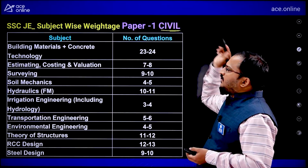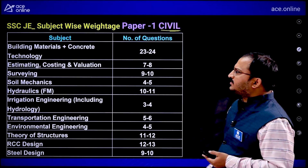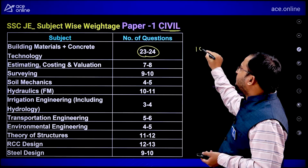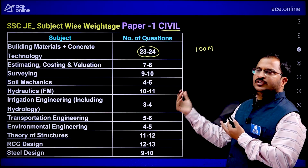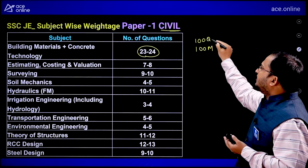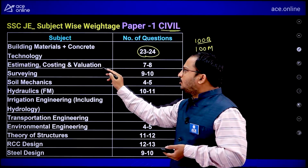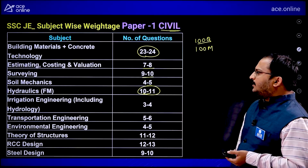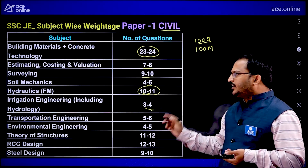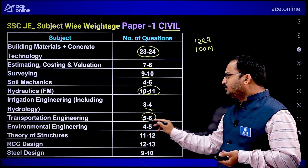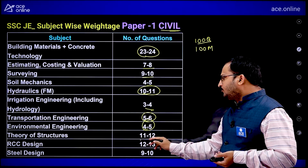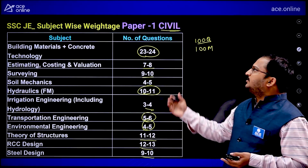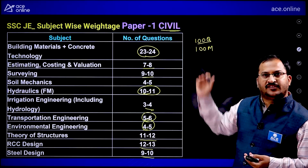For civil engineering students in Paper 1 technical part (Part A), the subject-wise weightage out of 100 marks is: Building Materials and Concrete Technology — 23 to 24 marks; Estimating, Costing and Valuation — 7 to 8; Surveying — 9 to 10; Soil Mechanics — 4 to 5; Hydraulics (Fluid Mechanics) — 10 to 11; Irrigation Engineering including Hydrology — 3 to 4; Transportation Engineering — 5 to 6; Environmental Engineering — 4 to 5; Theory of Structures — 11 to 12; RCC Design — 12 to 13; Steel Design — 9 to 10.